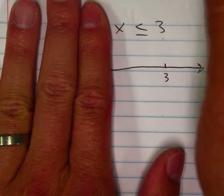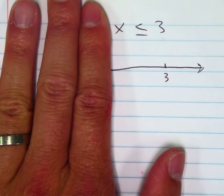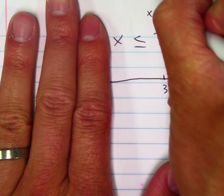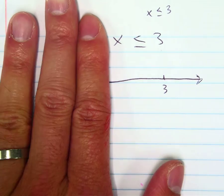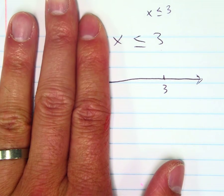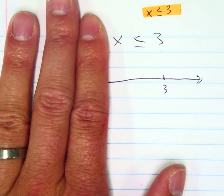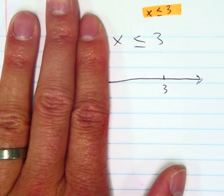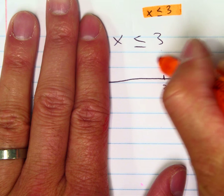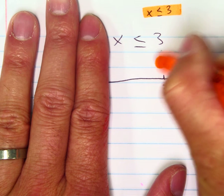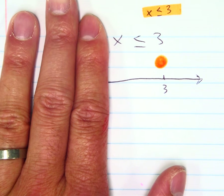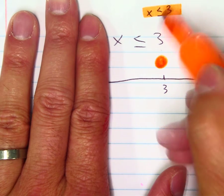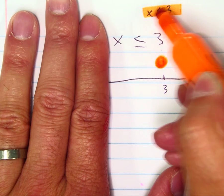And let's graph the first one. So if you need to, you can just write this a little bit separately. x is less than or equal to 3. Let's graph this in orange. Open or close circle. And which direction do I go? Inequality is pointing towards the left, so the arrow is to the left.